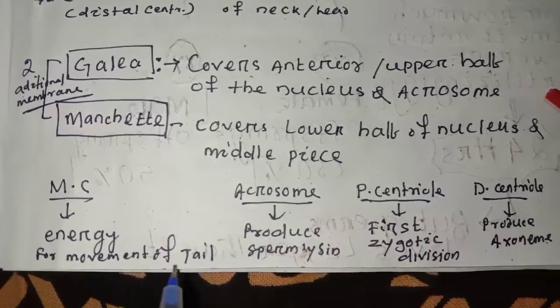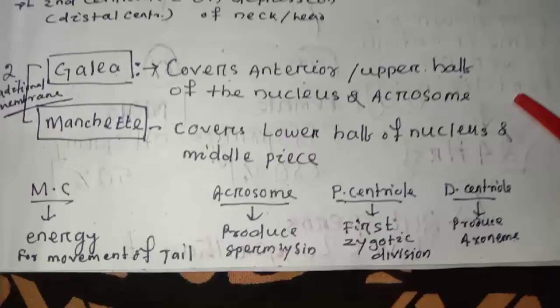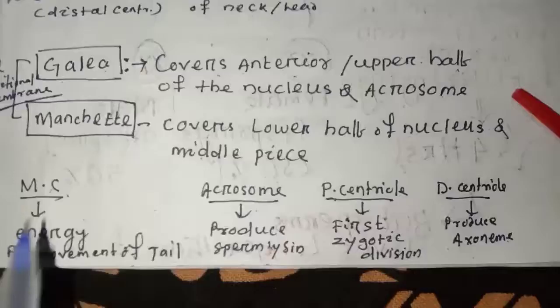The mitochondria provide energy for the movement of the tail. When the sperm moves, the tail must move. For the movement of sperm, energy is required, and that energy is provided by the mitochondria.